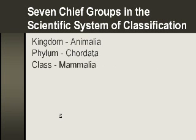Class is a finer division yet. Class members have more in common than do members of a phylum. For example, mammals, reptiles, and birds are all Chordata. Mammals have hair on their bodies and nurse their young. We showed you that picture of the platypus, which is also a mammal, even though it swims and lays eggs. Reptiles, on the other hand, are a different class — they have scales on their bodies. Birds have feathers. So that would be a finer breakdown.